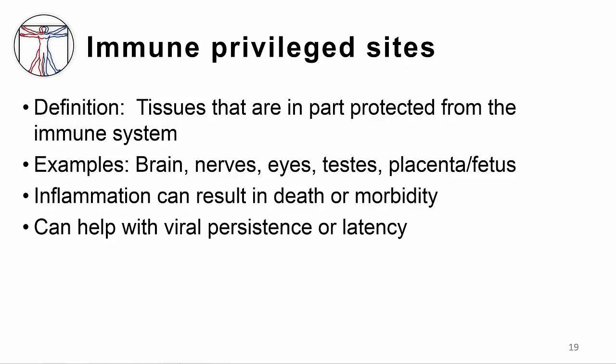VZV has evolved to find a niche within immune privileged sites, allowing for persistent infection. An immune privileged site is defined as tissue that is in part protected from the immune response because inflammation in these sites can result in death or significant morbidity of the host. The brain, eyes, testes, placenta, and fetus are all immune privileged sites. Herpes viruses commonly infect immune privileged sites like the nerves, which is one reason they are able to develop latency.